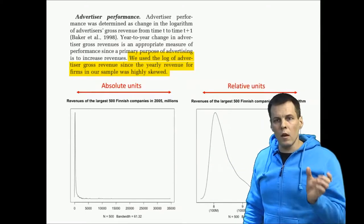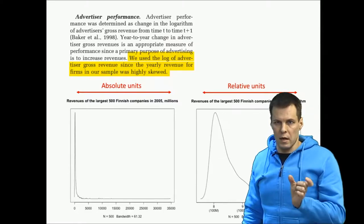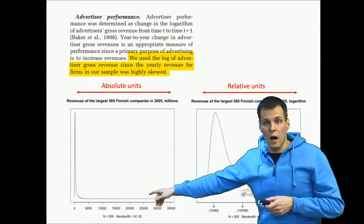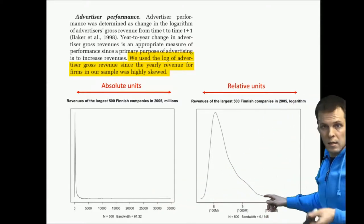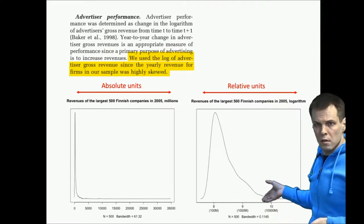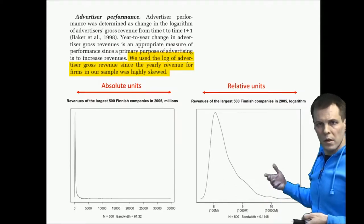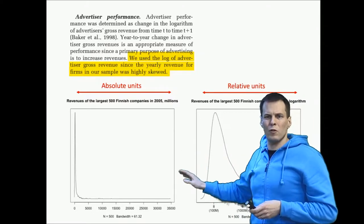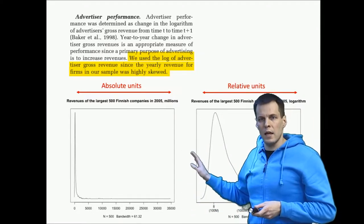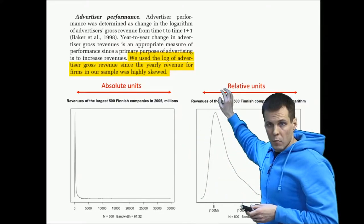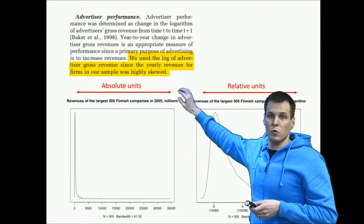So what the logarithm transformation actually does, it changes the shape of the distribution. So this is highly skewed. This is still skewed, but less so. So in some cases, it actually reduces the skewness of data, but that's not the reason why we actually use it. So we don't need our data to be normal, but instead, sometimes thinking in terms of relative units makes a lot more sense than thinking in terms of absolute units.